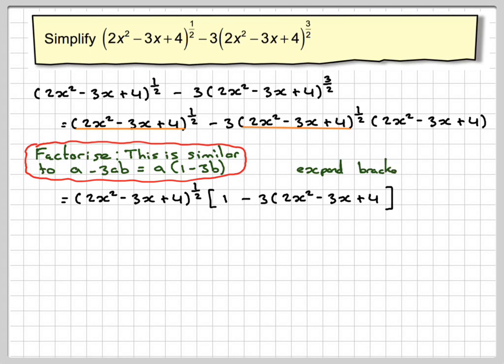Now what we've got to do is expand the bracket. Be very careful because there's a minus sign in front of it. We've got 1 - 3 times 2x², which is 6x². Minus 3 times -3x is +9x, and -3 times +4 is -12.